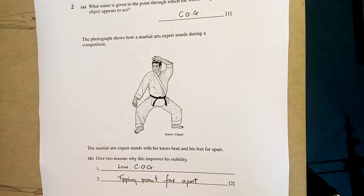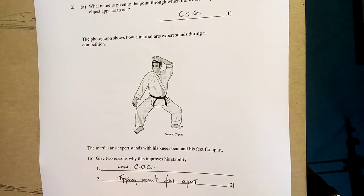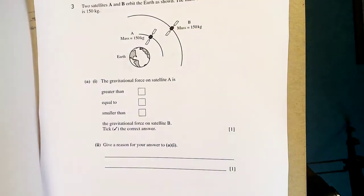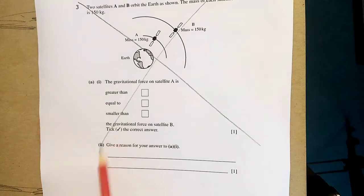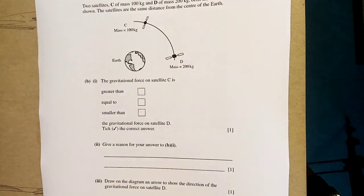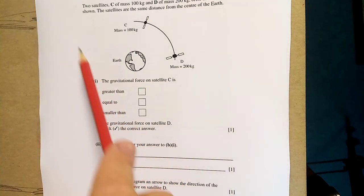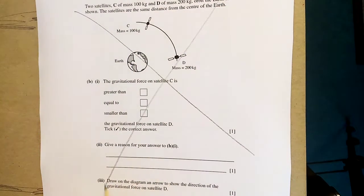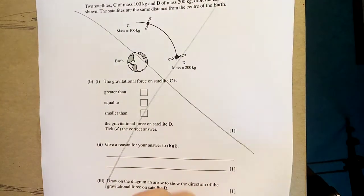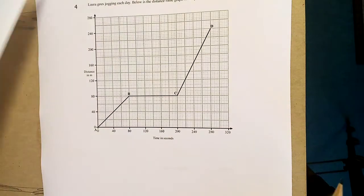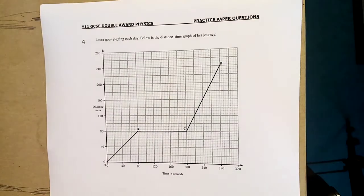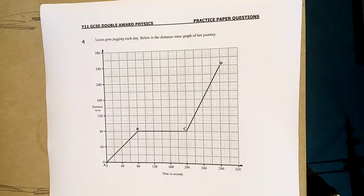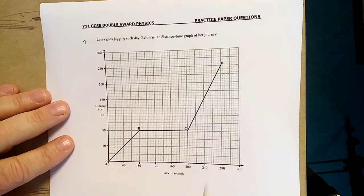So, I'll turn the page. Let's have a look at this. Year eleven, double award physics. Bad news yet - scrapped. Story of my life. A day late and a dollar short. You can see now. Let's look at number four. Now, Laura goes jogging each day. Below is the distance time graph. So it's a distance time graph.